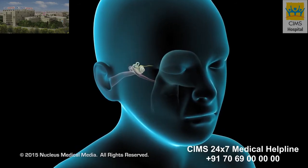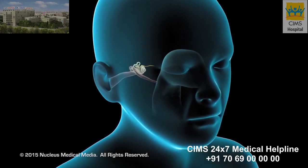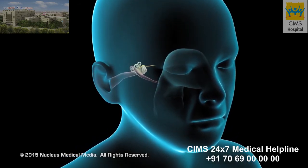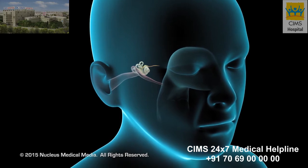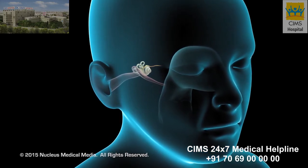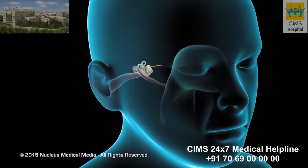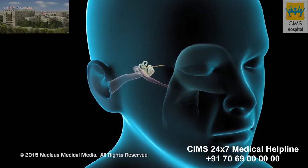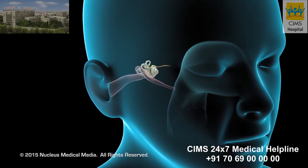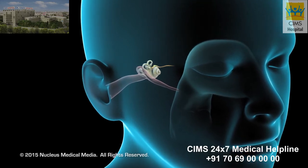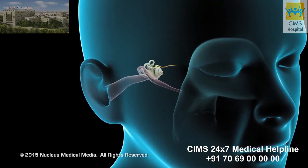A myringotomy, also known as a tympanostomy or tympanotomy, is a surgical procedure to remove fluid in the middle ear and re-establish equal air pressure on both sides of the eardrum.